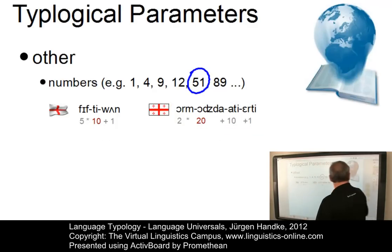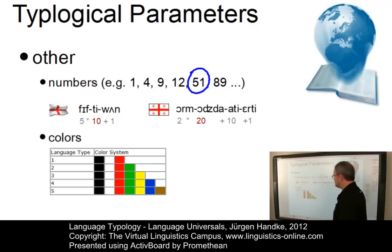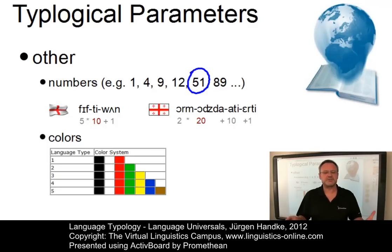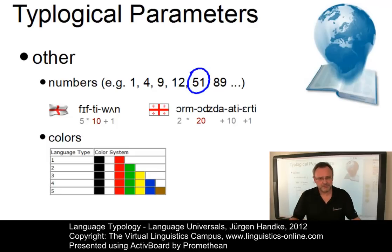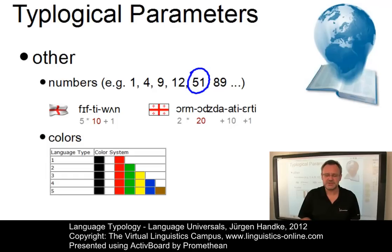Another parameter concerns the use of color words. It has been found that languages can be grouped into a general system ranging from 3 to 7 color terms and more. These are just two of many other possibilities to classify languages on the basis of non-linguistic parameters.